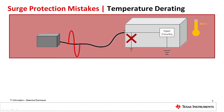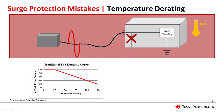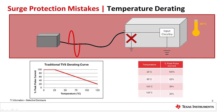Most TVS diode data sheets include a graph showing derating over temperature. TVS diode peak pulse current derates significantly at high temperature, often to half or even a quarter of the nominal value. So ensure that the TVS peak pulse current at your maximum ambient temperature will not cause failures.